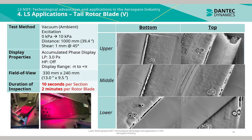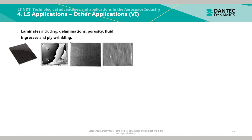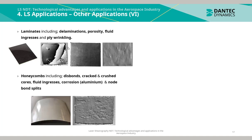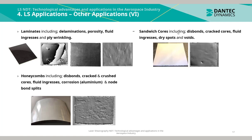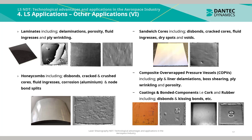There are multiple other Laser Shearography applications. For laminates: delaminations, porosity, fluid ingress, and ply wrinkling. For honeycombs: disbonds, cracked and crushed cores, fluid ingress, corrosion, and node bond splits. For sandwich cores: disbonds, cracked cores, fluid ingress, dry spots, and voids. For composite overpressure vessels: ply and liner delaminations, boss shearing, ply wrinkling, and porosity. For coatings and bonded components such as cork and rubber: disbonds and kissing bonds.